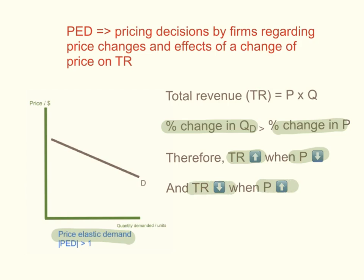This is why a lot of clothes manufacturers and fashion stores have sales at the end of the season — because at the end of the season, the demand for their products is quite price elastic. By dropping the price and having a sales discount, this will drastically increase their total revenue.